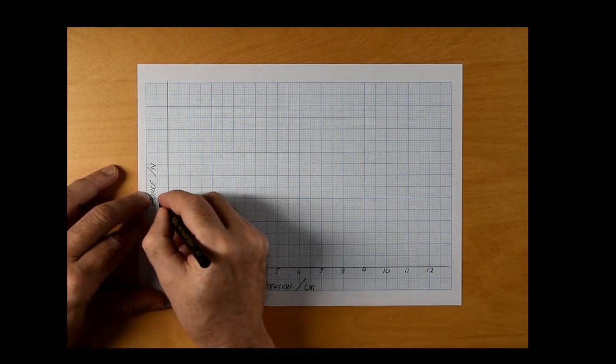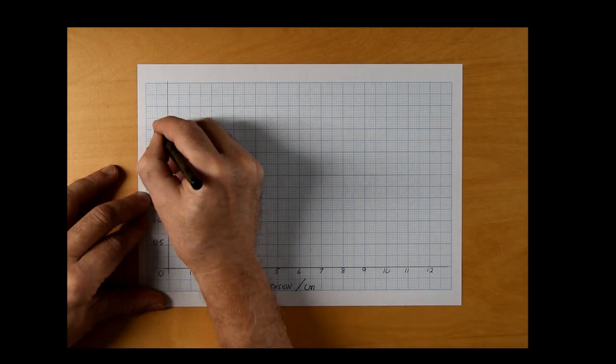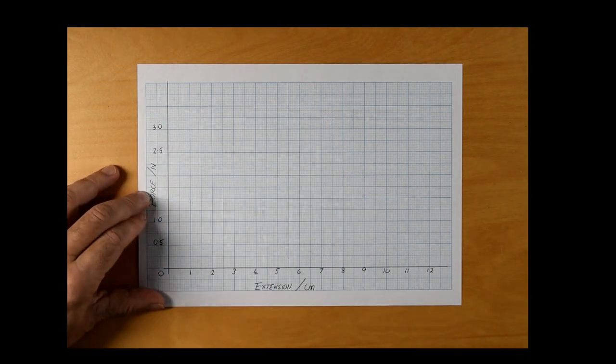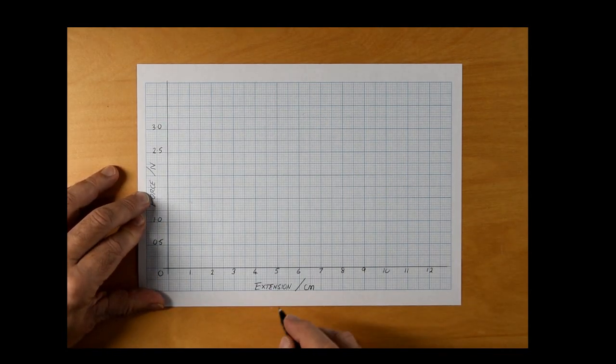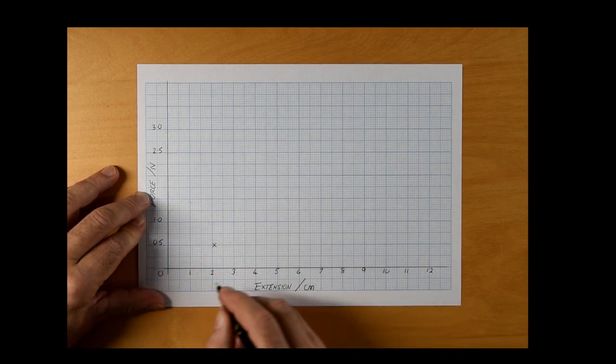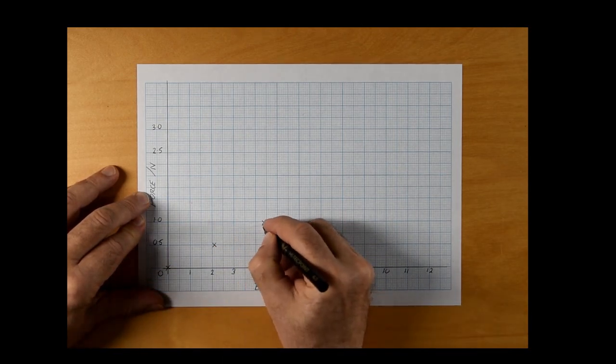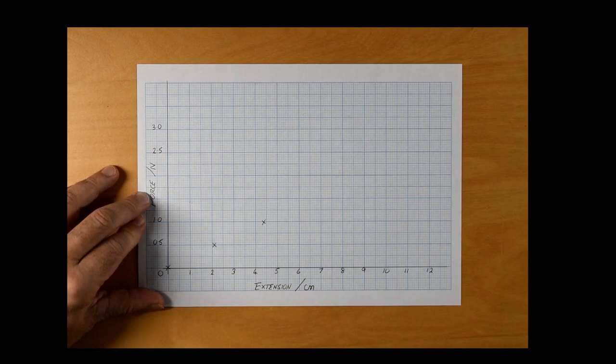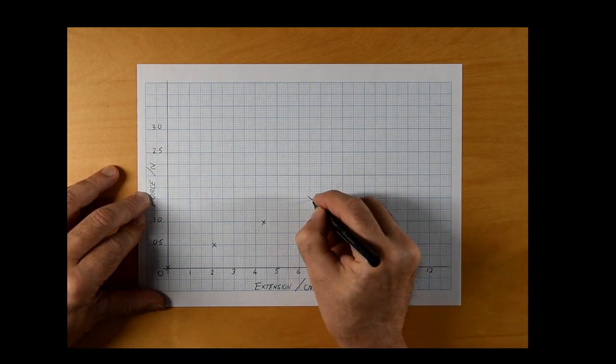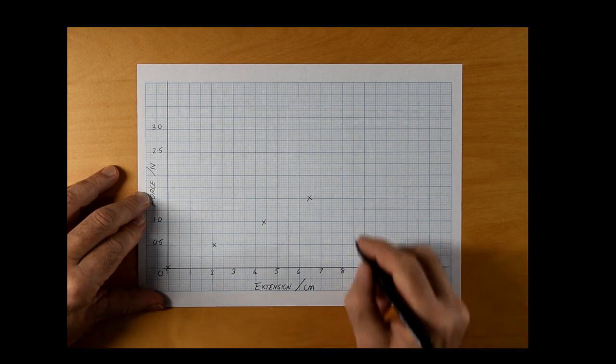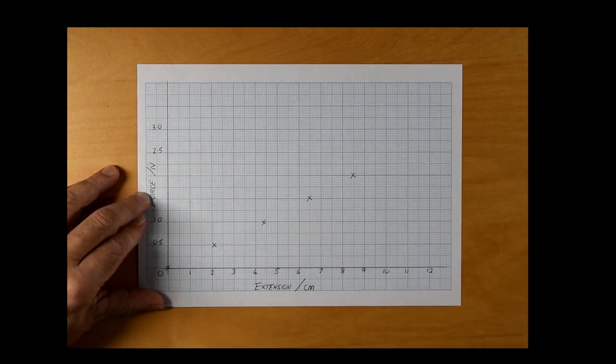As always, the graph should be as big as possible with sensible axes. So, in this case, working in centimeters along the bottom going from 0 to 13, and working in newtons up the side going from 0 to 3.5. 0, 0, once again, is a valid point and should be plotted.